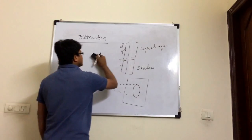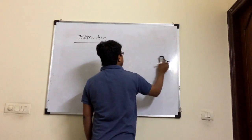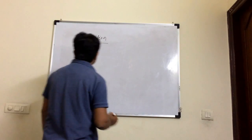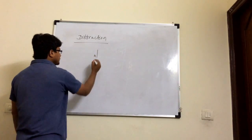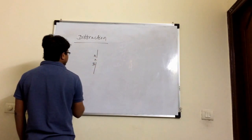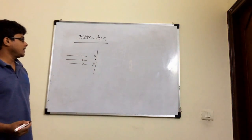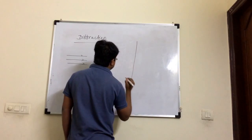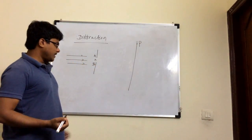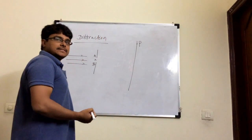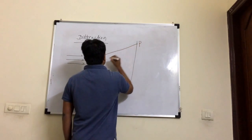Today we will see diffraction quantitatively — what will be the intensity distribution on the screen due to diffraction through a single slit. If I take a single narrow slit AB, the slit width is small 'a', and light rays are coming parallel from a distant source. We have a screen here, and we take an arbitrary observation point P. At this point P we need to find out whether the intensity is maximum or minimum.